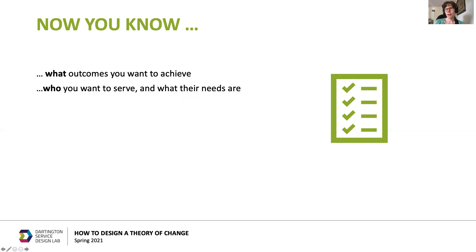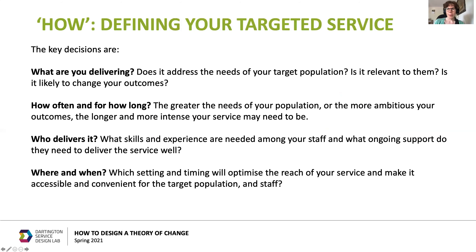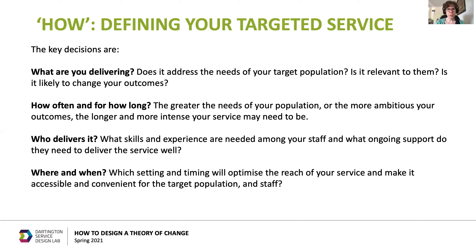Now you know what the outcomes are and who you want to work with. Let's consider how you will help them to get there — we're going to define the service now. What you do is key to achieving the change you want. Funding and other constraints will have an influence but the service you design has to be sufficient to get your target population to the outcome you're aiming for. The key decisions are: what is it that you're delivering, does it address the needs of your population, will they find it relevant, is it likely to change things for them, how often and for how long? Who should deliver it — what skills and experiences are needed, and what ongoing support or supervision do they need to deliver well?